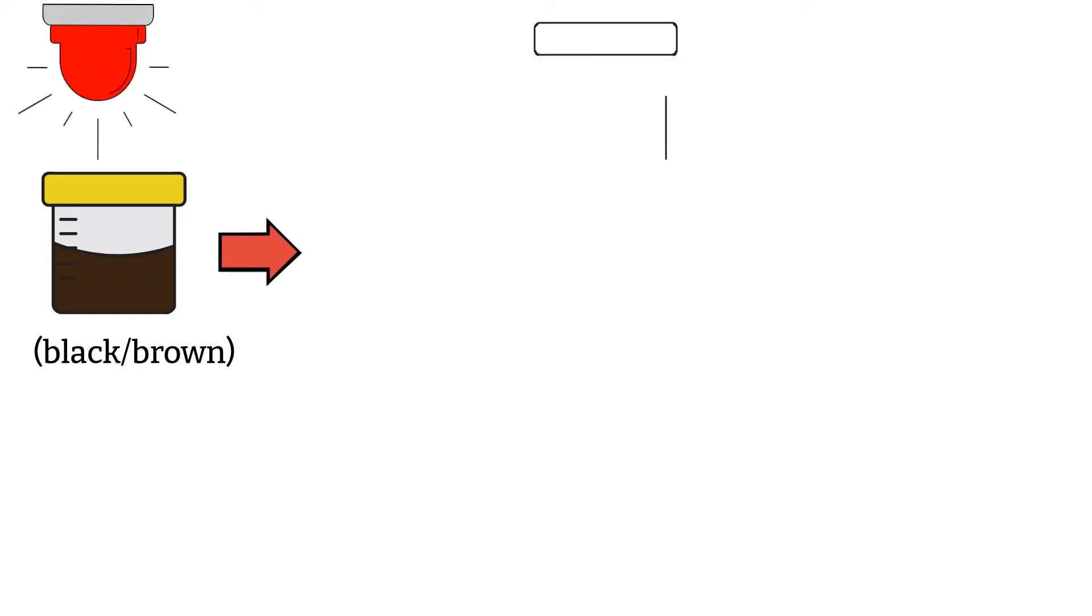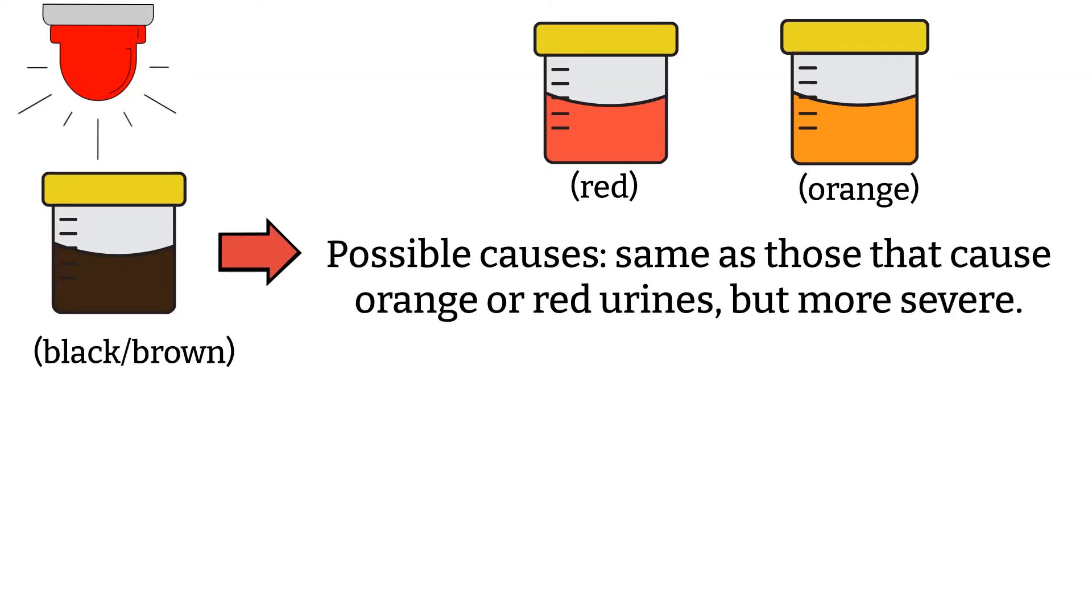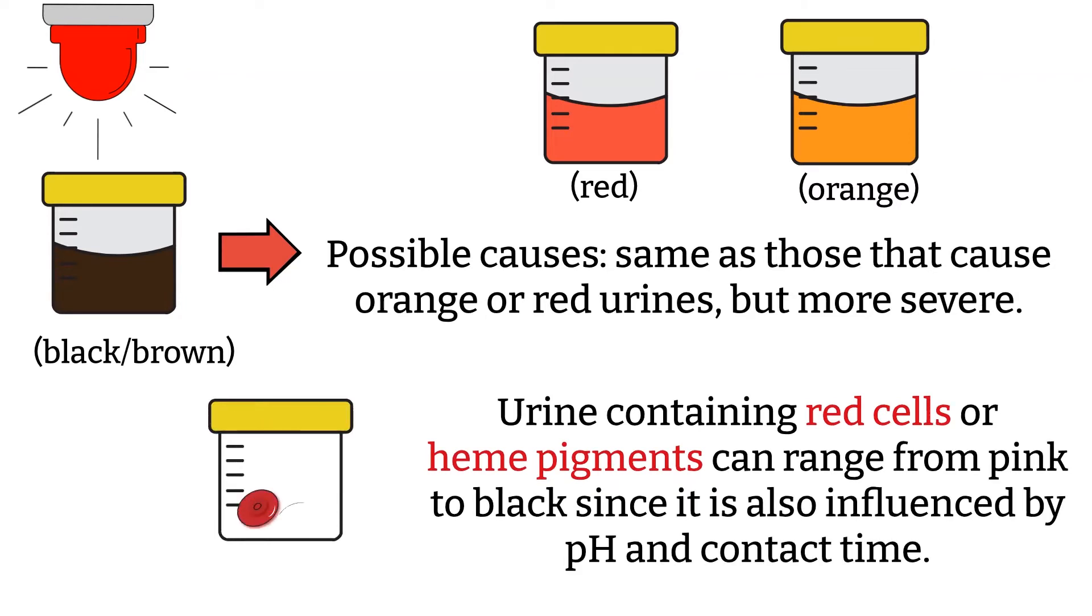Brown and black. Brown and black urine is not common, but it can be alarming when it happens because brown and black color urine can come from any cause of red or orange urine but in a more severe condition. Urine that contains red cells and heme pigments can range from pink to black because it is also influenced by the pH and the contact time between pigment and urine.